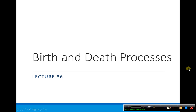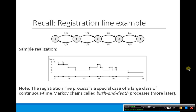This is lecture 36 and we're going to be talking about birth and death processes. We've already seen one example of a birth and death process - the registration line example where we could have at most four students. This was a special case of a larger class of continuous time Markov chains called birth and death processes, and in this lecture we're going to examine those birth and death processes in more depth.